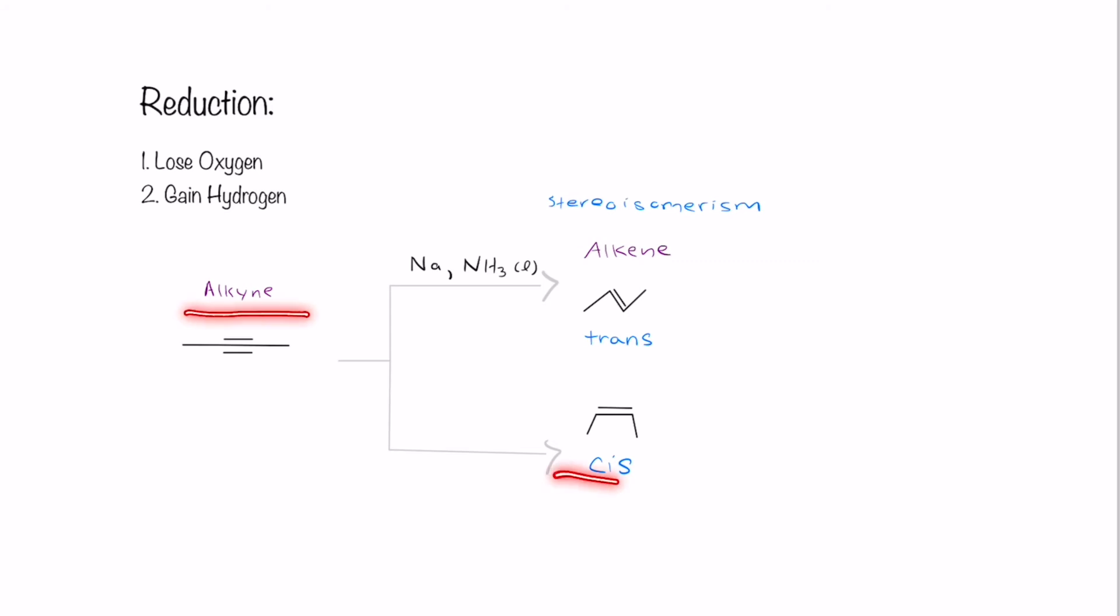If we want to turn our alkyne to a cis alkene, we would use something called Lindlar's catalyst. And the mnemonic that I make to remember that is Lindlar's catalyst, cis. So it kind of rolls off the tongue and makes it a little easier to remember.